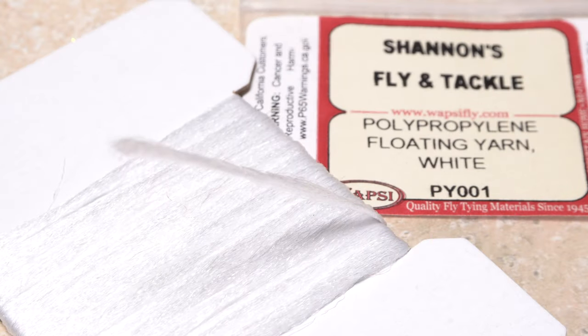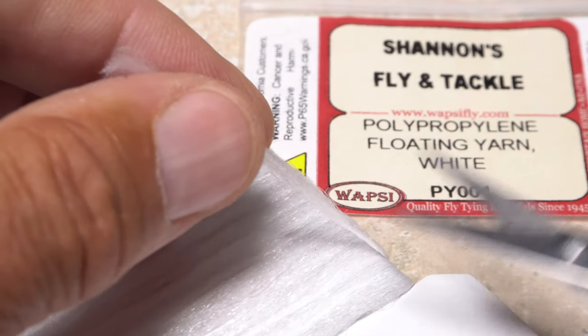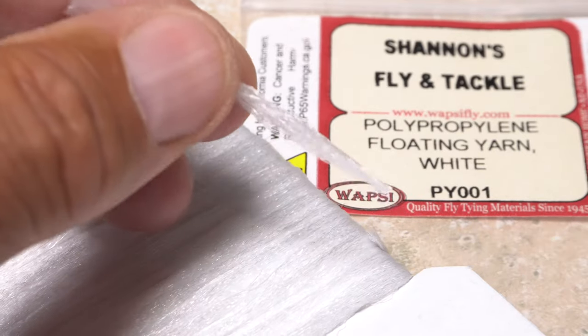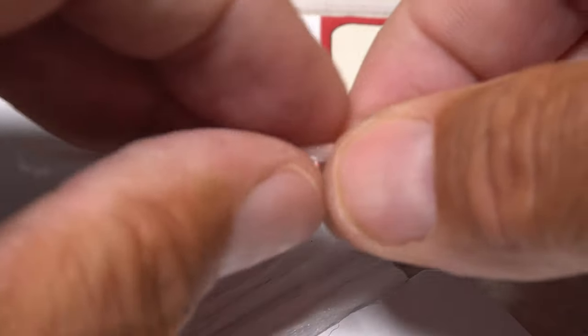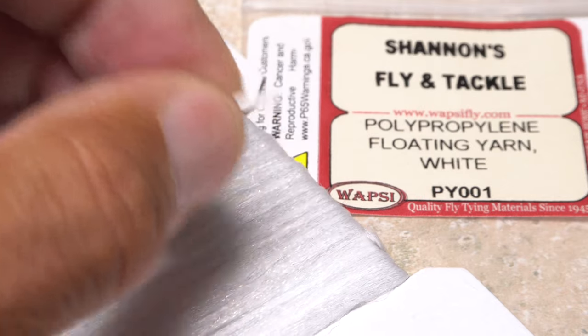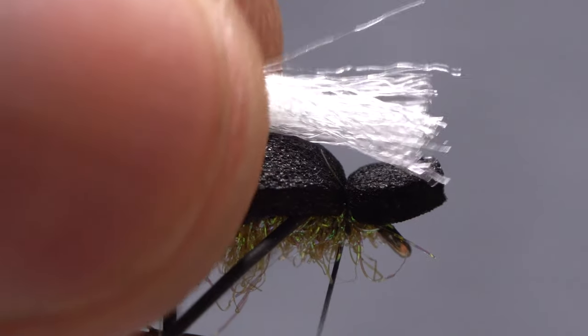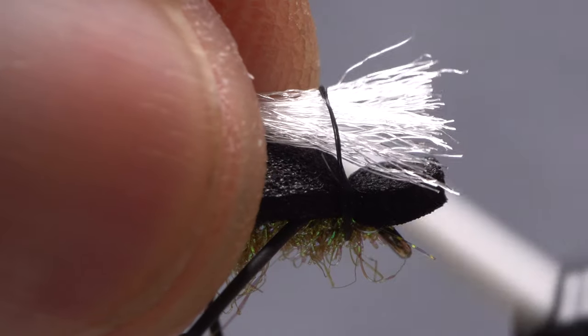White polypropylene floating yarn is used to help make the fly a bit more visible to the angler when it's on the water surface. After snipping a card width segment free, get hold of the snipped off end and place it on top of the fly above your tying thread.